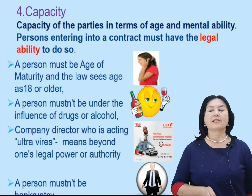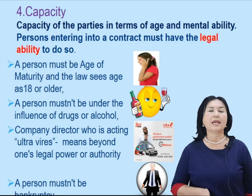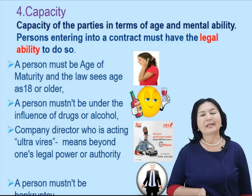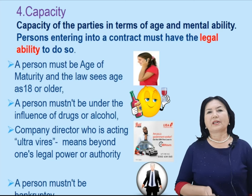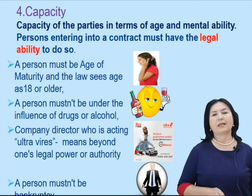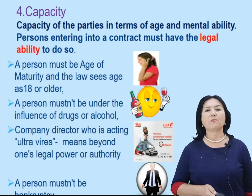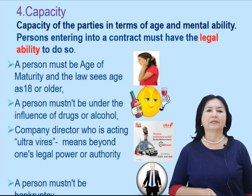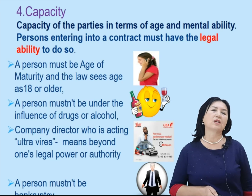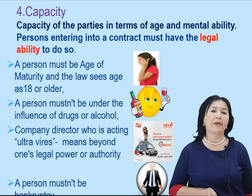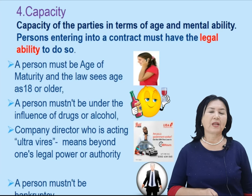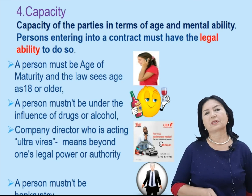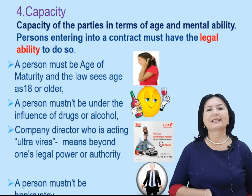Capacity is a mental ability. Capacity of the parties is assessed in terms of age and mental ability. Persons entering into a contract must have legal ability to do so. A person must be of the age of maturity, at least 18 years old or older. A person mustn't be under the influence of drugs or alcohol. A company director who is acting ultra vires — meaning beyond their legal power or authority — also lacks capacity. A person mustn't be bankrupt.